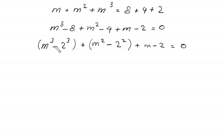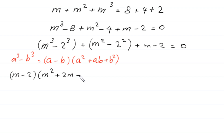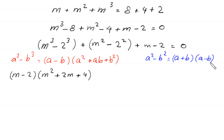Using the difference of cubes identity a³ - b³ = (a - b)(a² + ab + b²), the term m³ - 2³ becomes (m - 2)(m² + 2m + 4). Using the difference of squares identity a² - b² = (a + b)(a - b), the term m² - 2² becomes (m + 2)(m - 2).